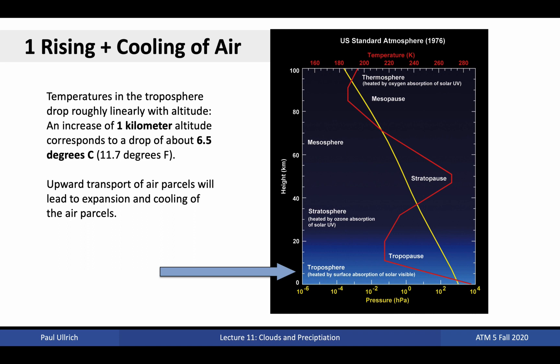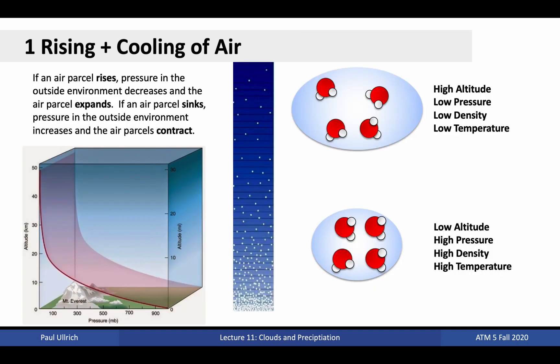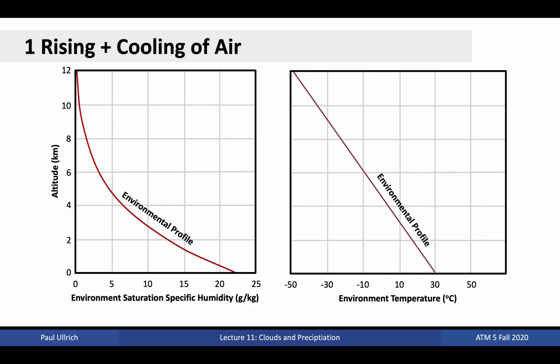For clouds to form, there must be a mechanism to lift air. In the process of being lifted, the air will cool, driving the system towards saturation. Generally, in the troposphere, each kilometer of altitude represents a drop of about 6.5 degrees Celsius on average, although rising air could cool as fast as 10 degrees Celsius per kilometer. As the air parcel rises, pressure in the outside environment decreases and the air parcel expands, leading to the temperature of the air parcel dropping as well.